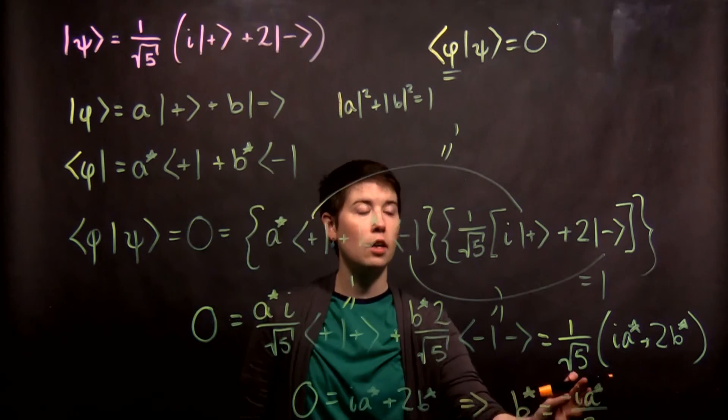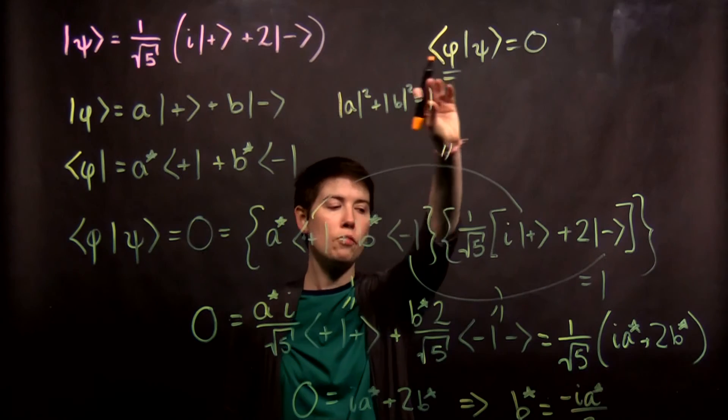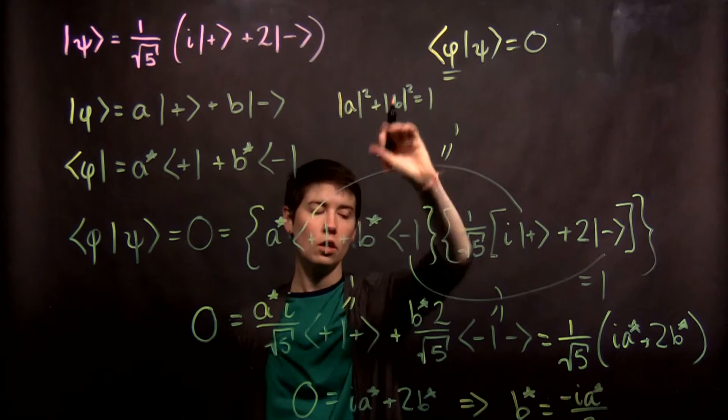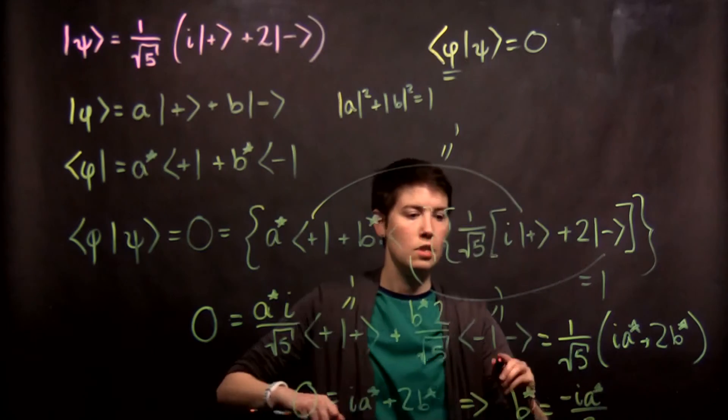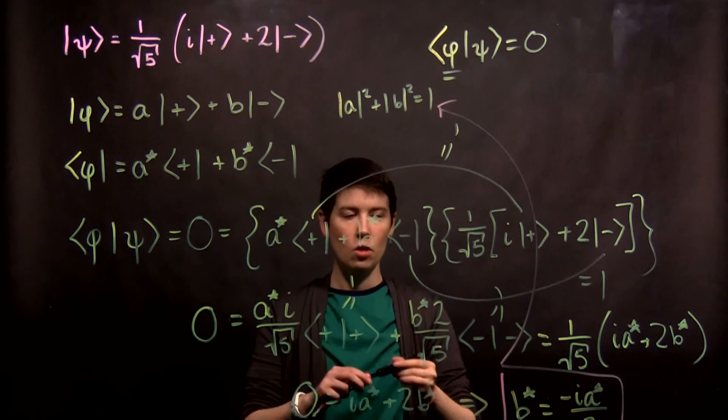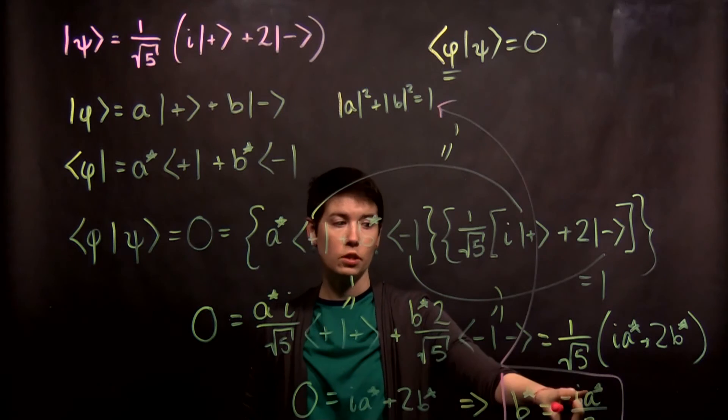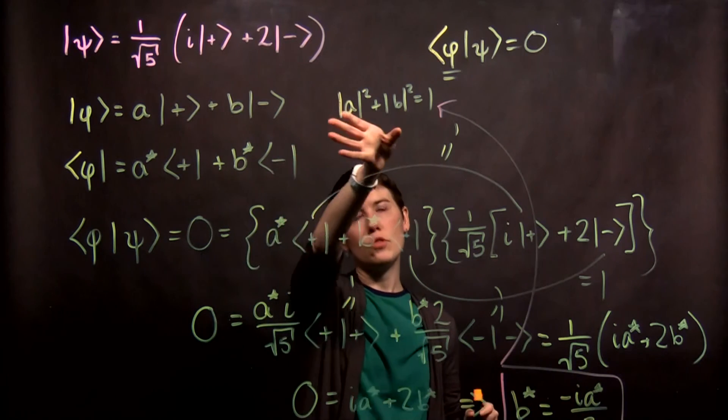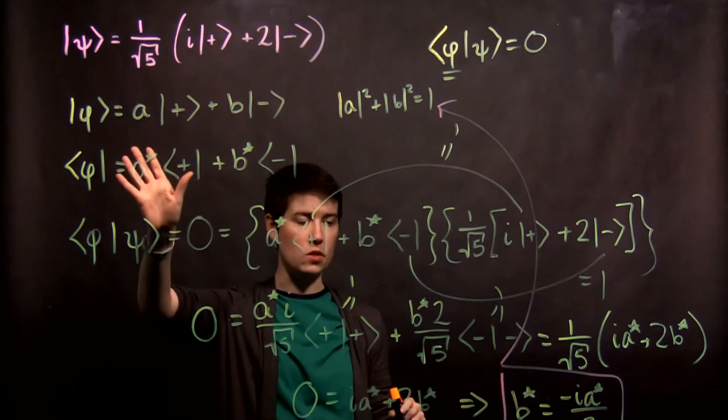And so we could go back and plug this in and actually solve for a this way. So take this and plug it into there. That would allow you to actually solve for a star slash a. And then you can use this final constraint to get b as well.